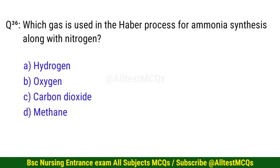Question number 36. Which gas is used in the Haber process for ammonia synthesis along with nitrogen? The right option is C: Hydrogen.